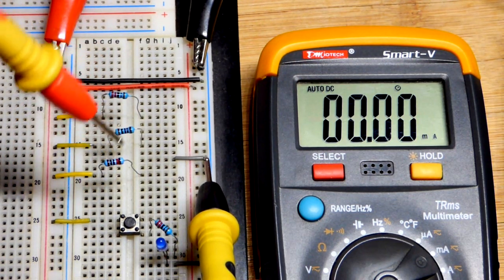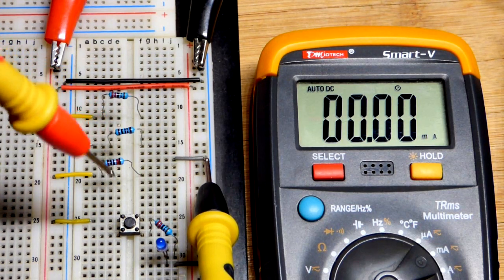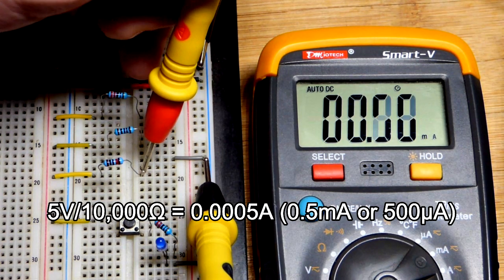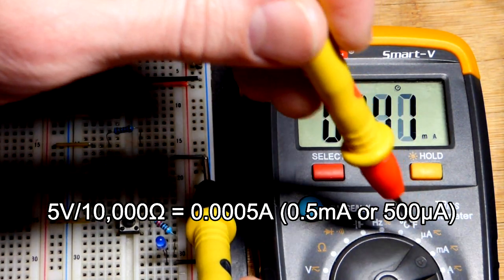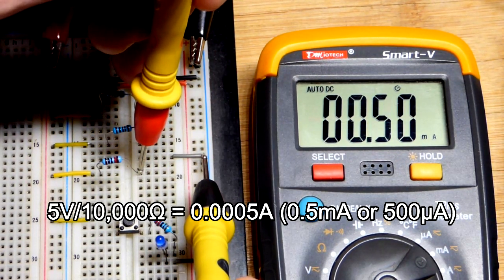So if you have 10 times the resistance, according to Ohm's law, this is a 10,000 ohm resistor, you should have one tenth the current. So we expect 0.5 milliamps right there. And we can get a more exact number by putting in the microamp range, but we're not going to do that in this video. We're going to keep it simple.